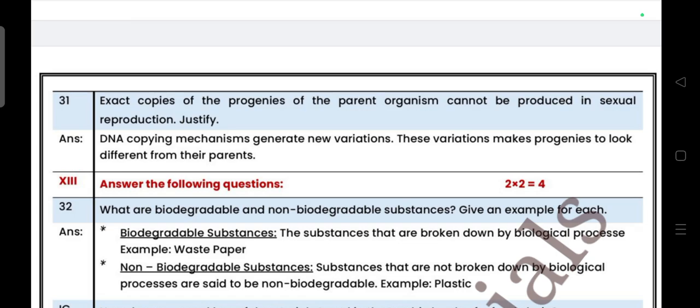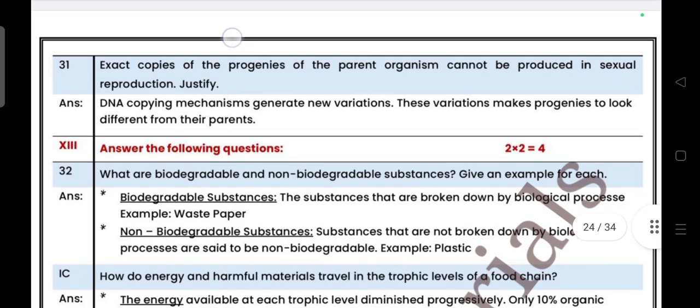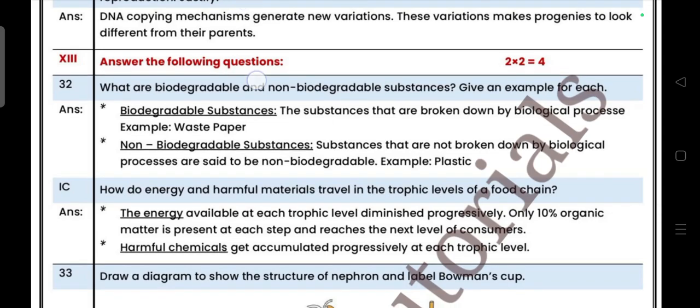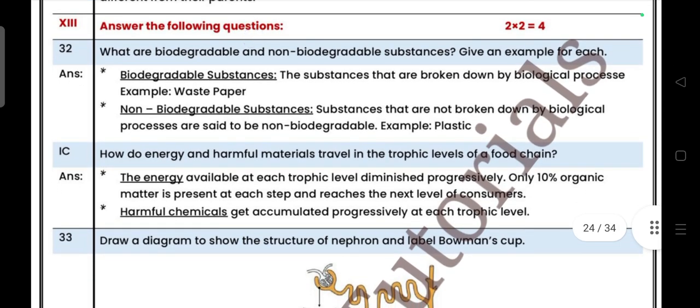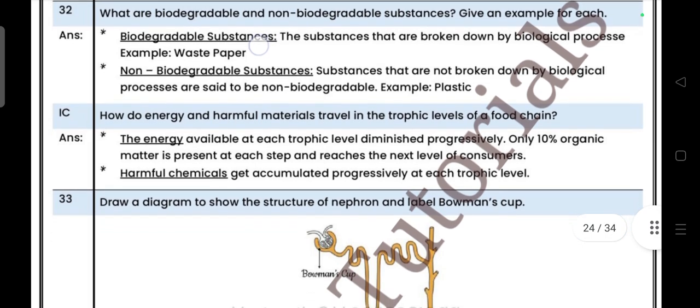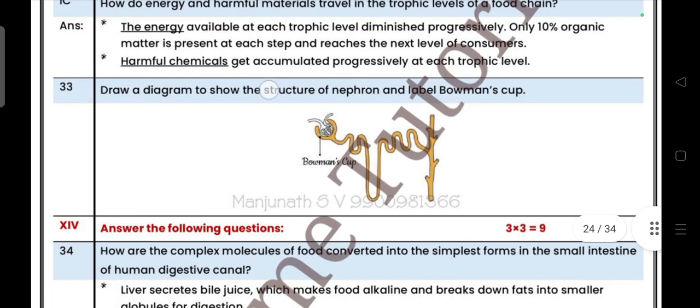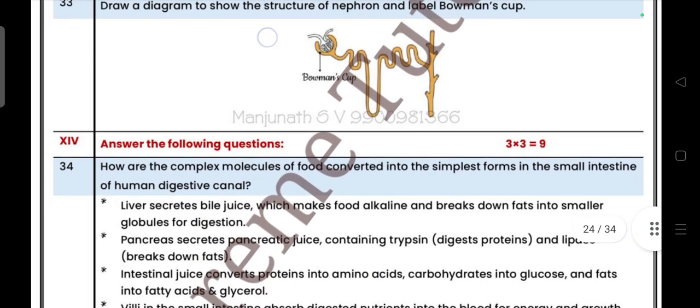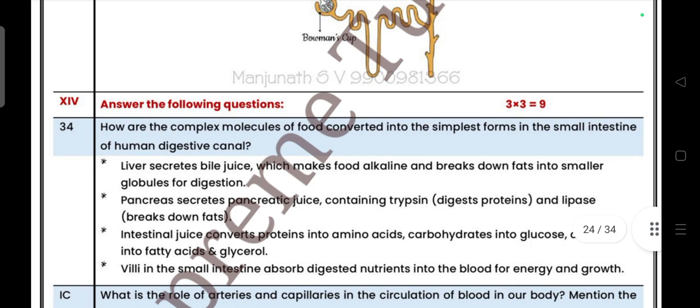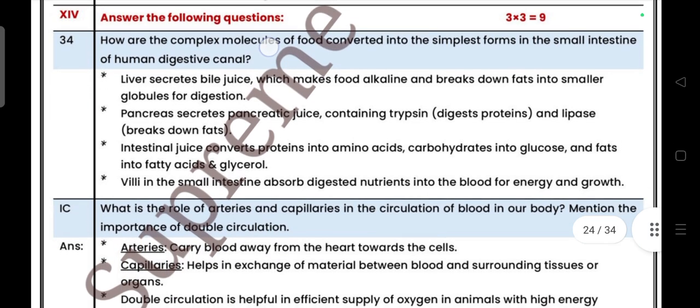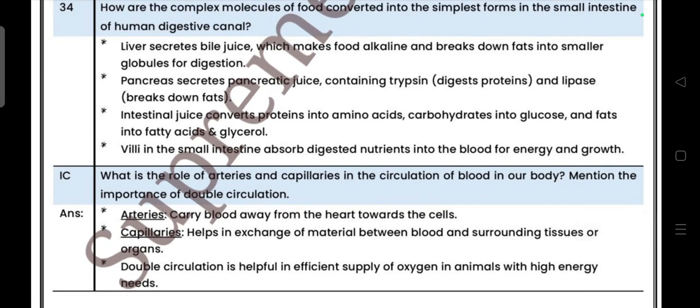Next one, two more questions. What are biodegradable and non-biodegradable substances? Give an example for each. How do energy and harmful material travel in a trophic level of a food chain? Draw a diagram to show the structure of nephron and label Bowman's capsule. Next one, how are complex molecules of food converted into simplest form in a small intestine of human digestive canal? What is the role of arteries and capillaries in circulation of blood in our body? Mention the importance of double circulation.